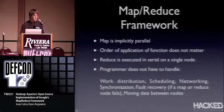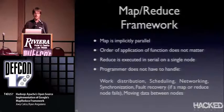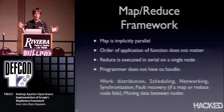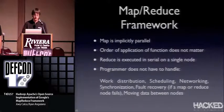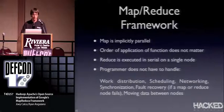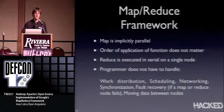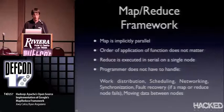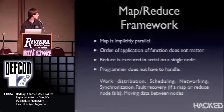Given this model, map is implicitly parallel — you can break up your entire input data set and run it all in parallel, then bring it back together for reduce. The order of application of the function doesn't matter in the mapper because you're doing it in parallel. Reduce is executed in serial on a single node because you're computing across the entire data set, whereas map computes on pieces. Hadoop takes care of all the complex infrastructure so you don't have to worry about any of that.